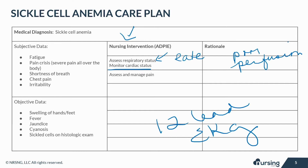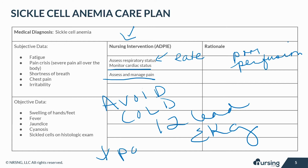With sickle cell, blockage in the vessels causes intense throbbing pain that may change location from one body part to another. Avoid cold compresses, as cold will cause further vasoconstriction and exacerbate the pain, while warm compresses will dilate vessels to promote circulation and reduce pain as well as muscle tension.